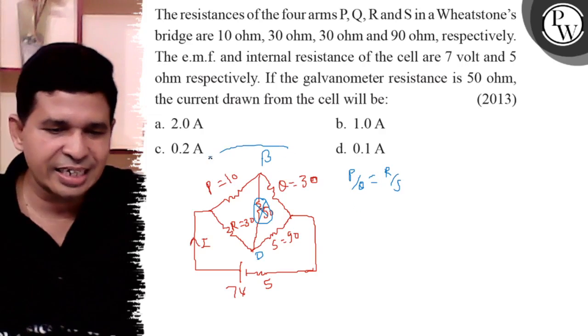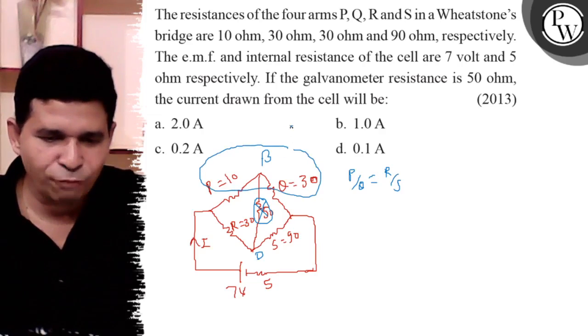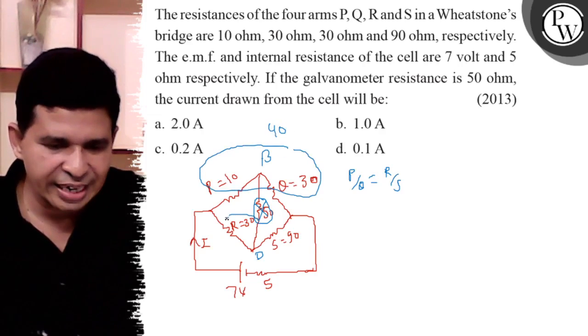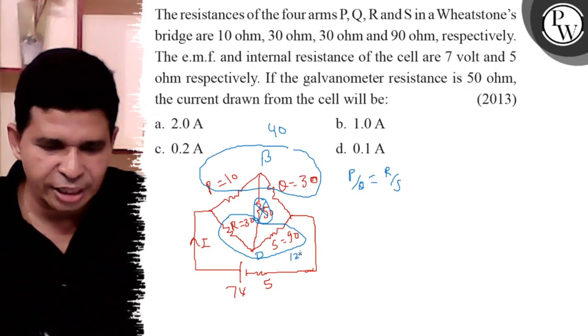So 10 and 30 are in series, giving 40 ohm. And 30 and 90 are also in series, giving 120 ohm.